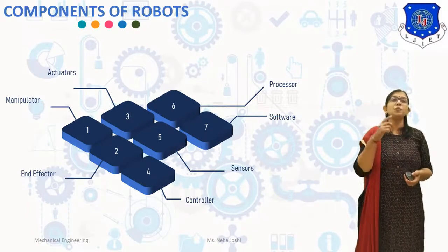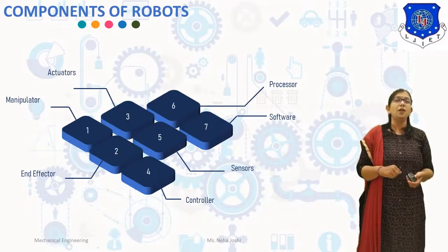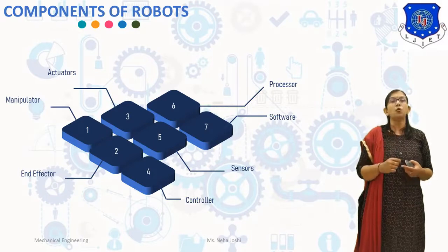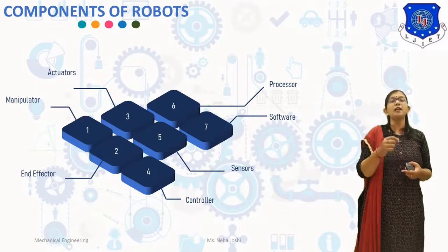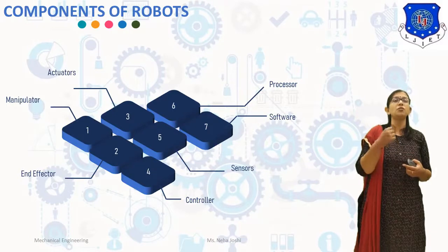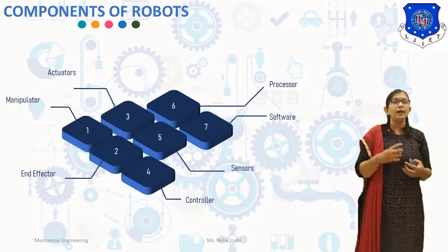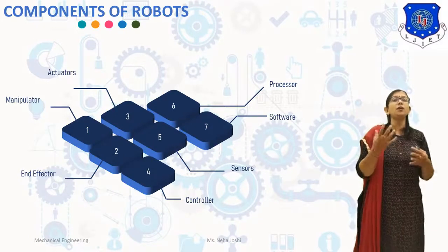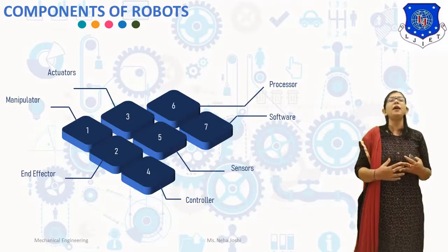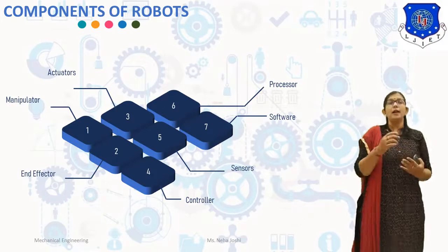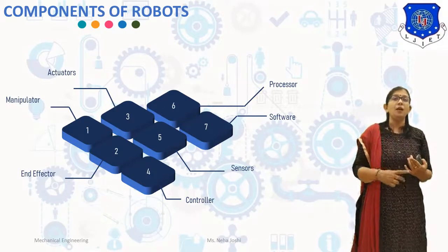The next component is the processor, which is the brain of the robot. It calculates the motion of the joints to achieve the desired actions of the robot. It sends signals to the controller and receives feedback from the controller.